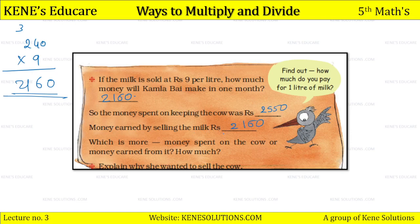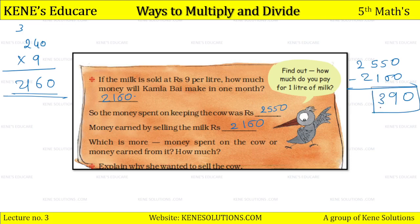The money spent on the cow — 2550 rupees — is more than what she earns by selling the milk — 2160 rupees. The difference is 390 rupees. So the amount spent is more than the amount earned.